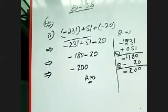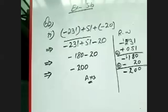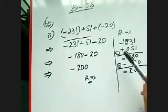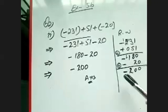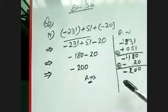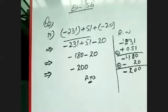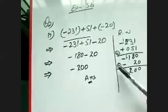Remember when doing addition and subtraction: multiply the signs first, and whichever sign results from that multiplication, apply that function to the numbers. If you get a negative sign, do subtraction. If you get a positive sign, do addition. Opposite signs mean subtraction; same signs mean addition.